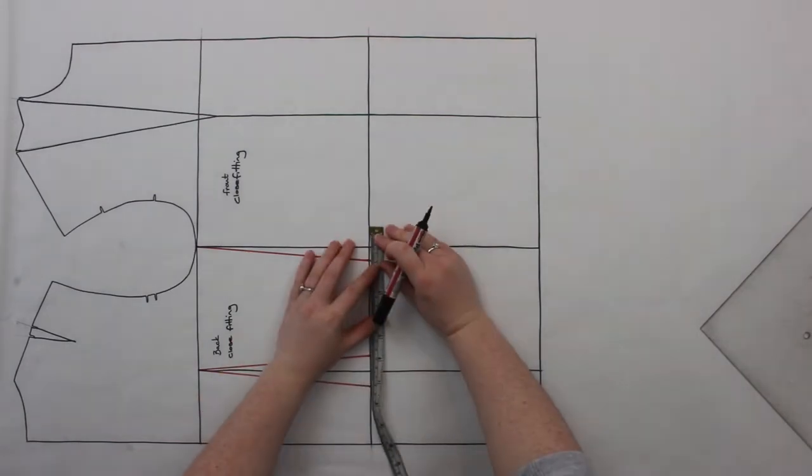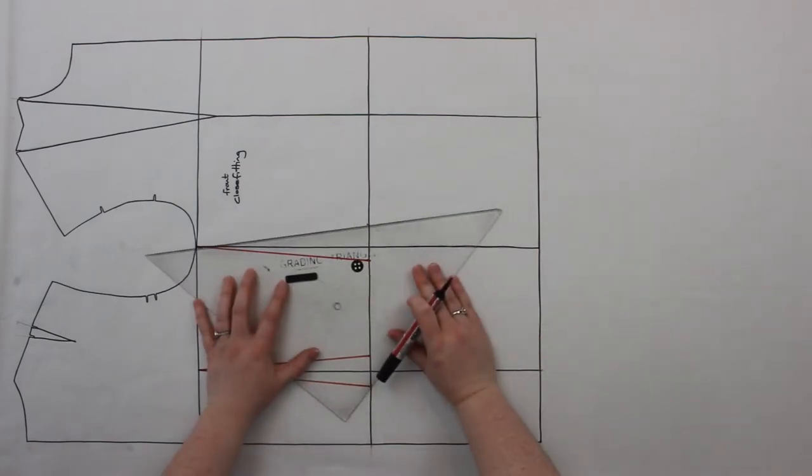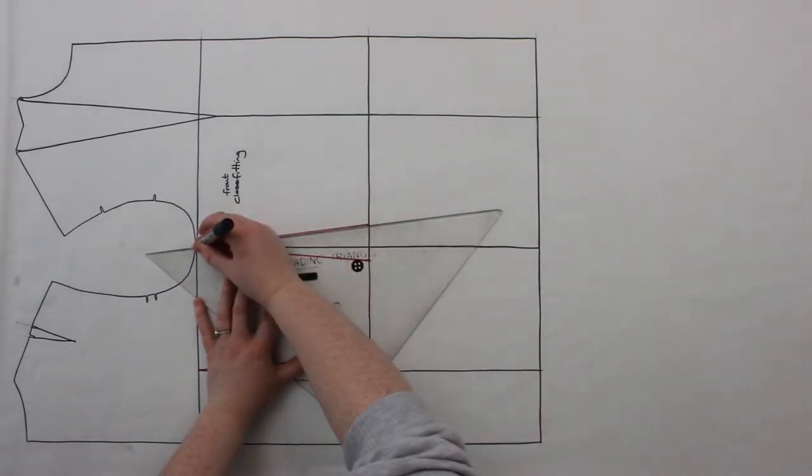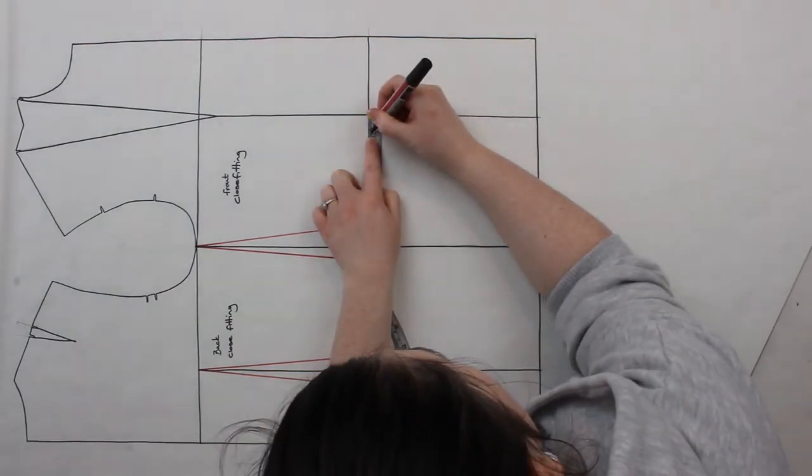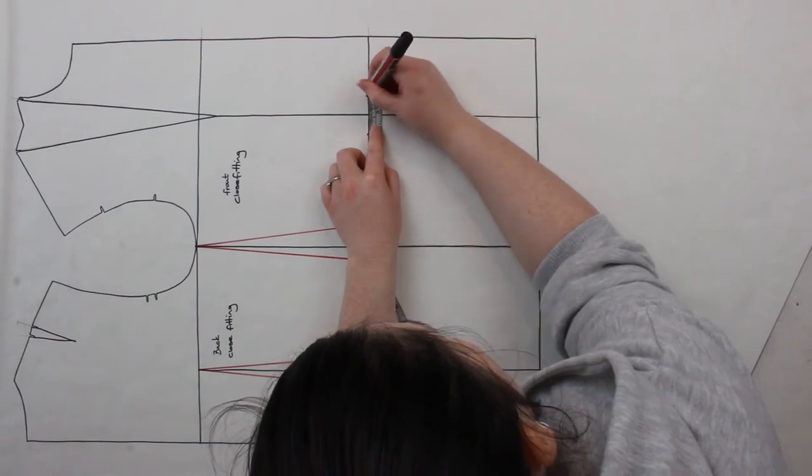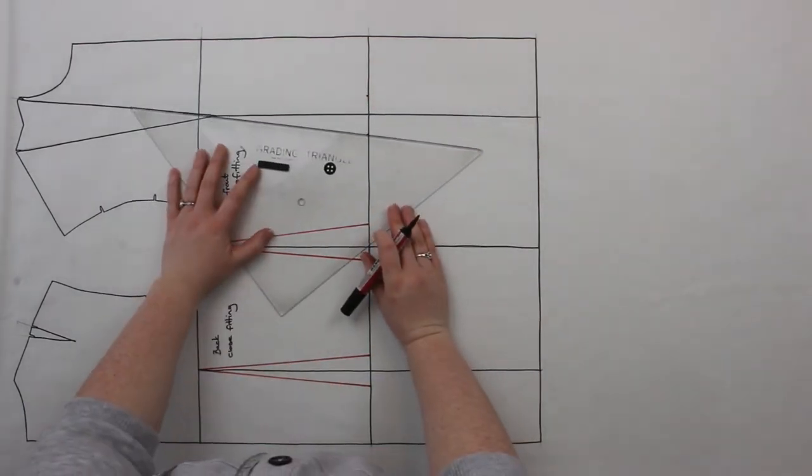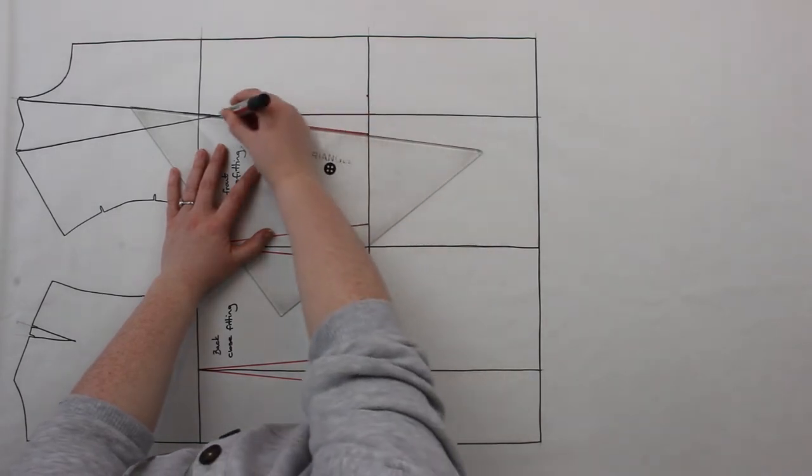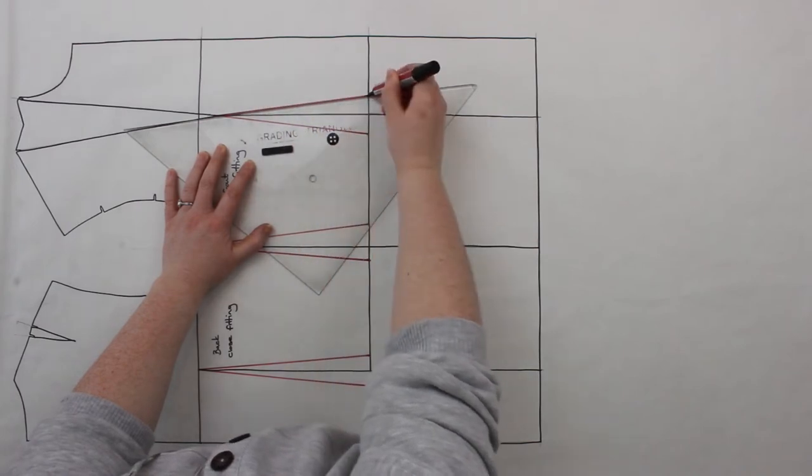At the front side seam, measure in 2.5 centimeters and then draw a line from this point right up to the armhole. This is going to be your new front side seam. On the front, you're going to create another dart and this is going to be 4.5 centimeters wide. Measure 2.25 centimeters each side of that line and then draw a line from both of these new points up to the end of the existing dart.